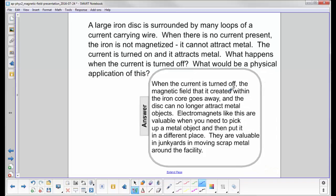When the current is turned off, the magnetic field that it created within the iron core goes away and the disc can no longer attract metallic objects.